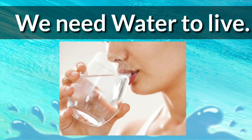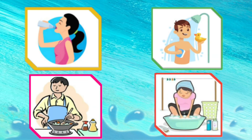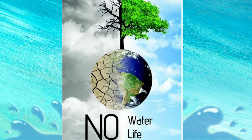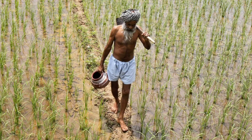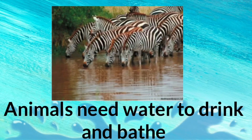We need water to live. We need it to drink, bath, cook and wash clothes. Plants and animals also need water to live. Fish live in water. Farmers need water to grow crops. Plants need water to make food. Animals need water to drink and bath.